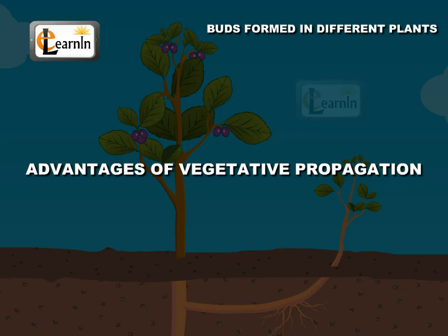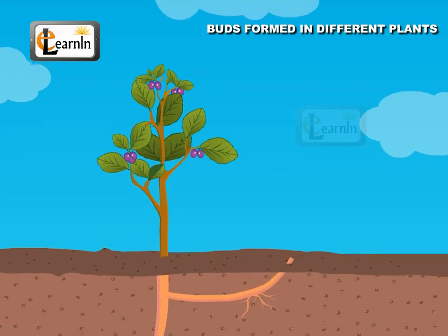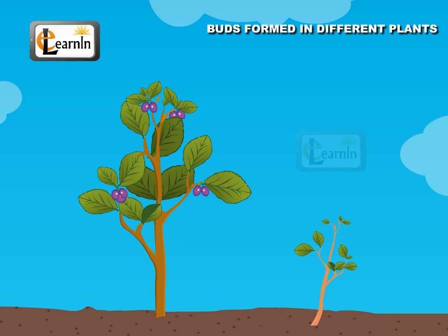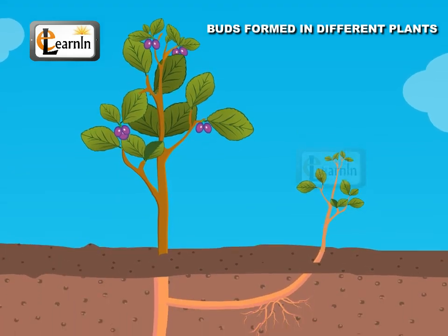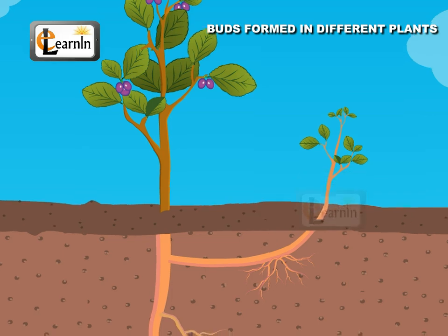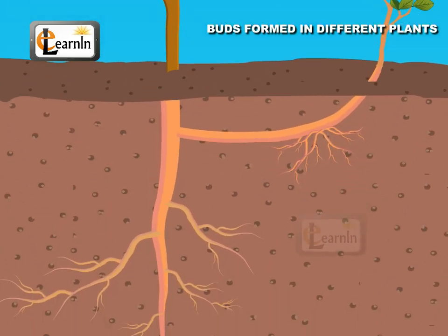Advantages of vegetative propagation: Vegetative propagation helps to maintain fixed qualities of the parent plant. Vegetative reproduction offers a uniform rootstock for budding or grafting. This rootstock can be selected from a plant that is immune to diseases.